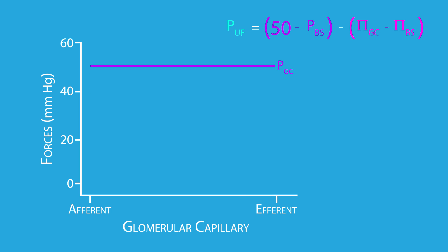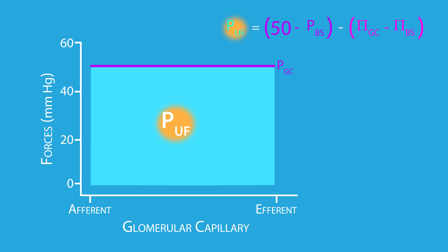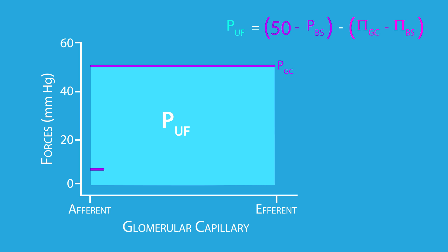Now if the glomerular capillary hydrostatic pressure were left unopposed, the net ultrafiltration pressure — represented by this blue area — would equal the glomerular capillary hydrostatic pressure, in this case 50 millimeters of mercury. However, as the filtrate enters the Bowman space, it creates a small but uniform hydrostatic pressure of about 10 millimeters of mercury.